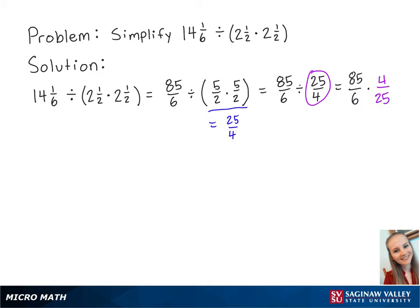When we multiply two fractions, we multiply the numerators and the denominators. We can do this by merging the two fractions into one. So this is equal to 85 times 4 over 6 times 25.